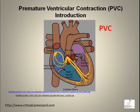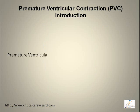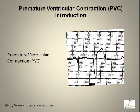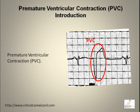Premature ventricular contraction, or PVC, is an early conduction originating from the ventricular muscles. Its features include a bizarre QRS followed by a compensatory pause, with a QRS duration of more than 0.10 seconds.